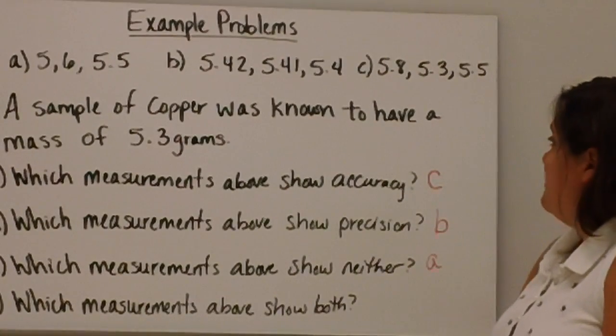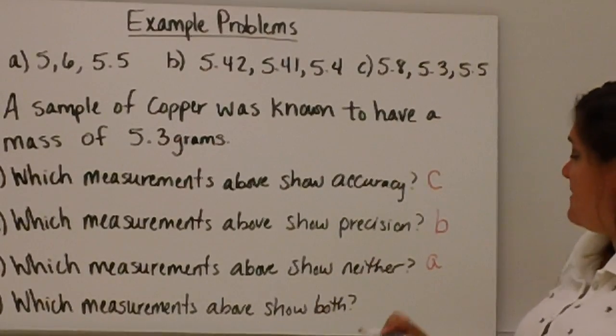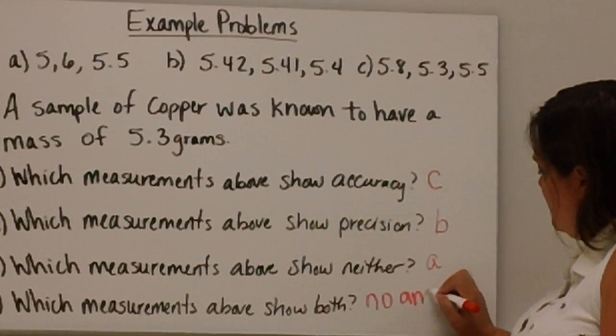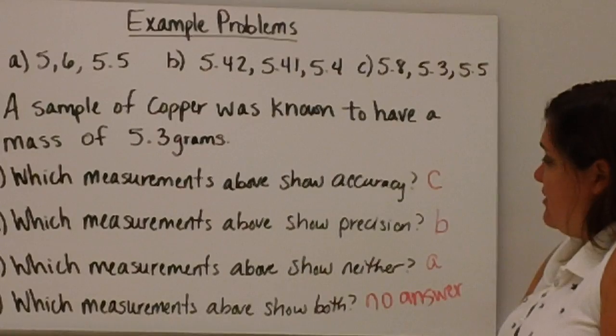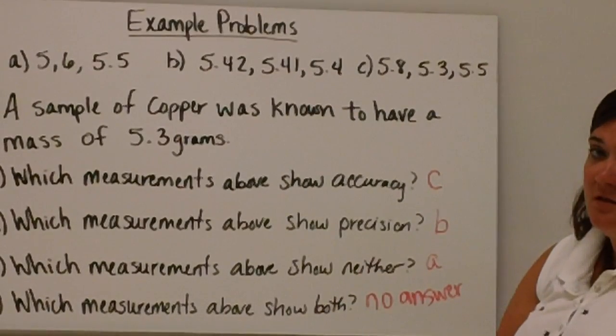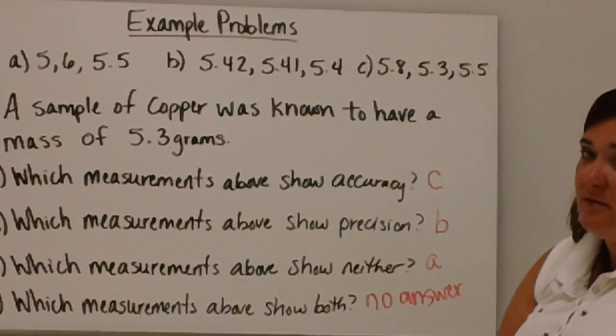Which measurements show both? In this case, there is no answer. None of these show both accuracy and precision. In order to show both, you have to have the right answer, and the measurements would have to be close to each other. Say maybe 5.3, 5.29, 5.31, something like that.